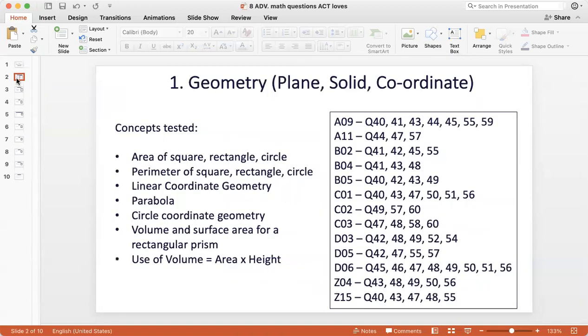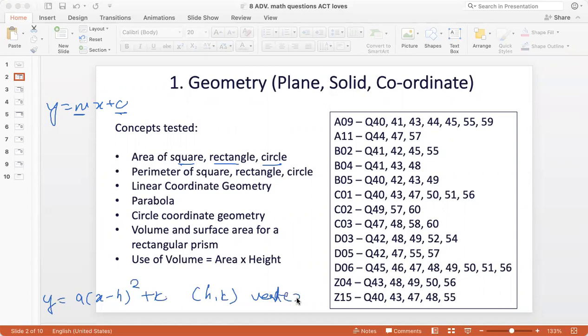The first topic by far is geometry. If you include plane, solid, and coordinate geometry, this accounts for a whopping 61 questions in the math tests since 2018. The concepts tested include the area of plane figures like square, rectangle, and circle, the perimeter of these plane figures, linear coordinate geometry with the equation y = mx + c where m is the slope and c is the y-intercept, parabola with the equation y = a(x - h)² + k where (h, k) is the vertex and other variations, and circle coordinate geometry.